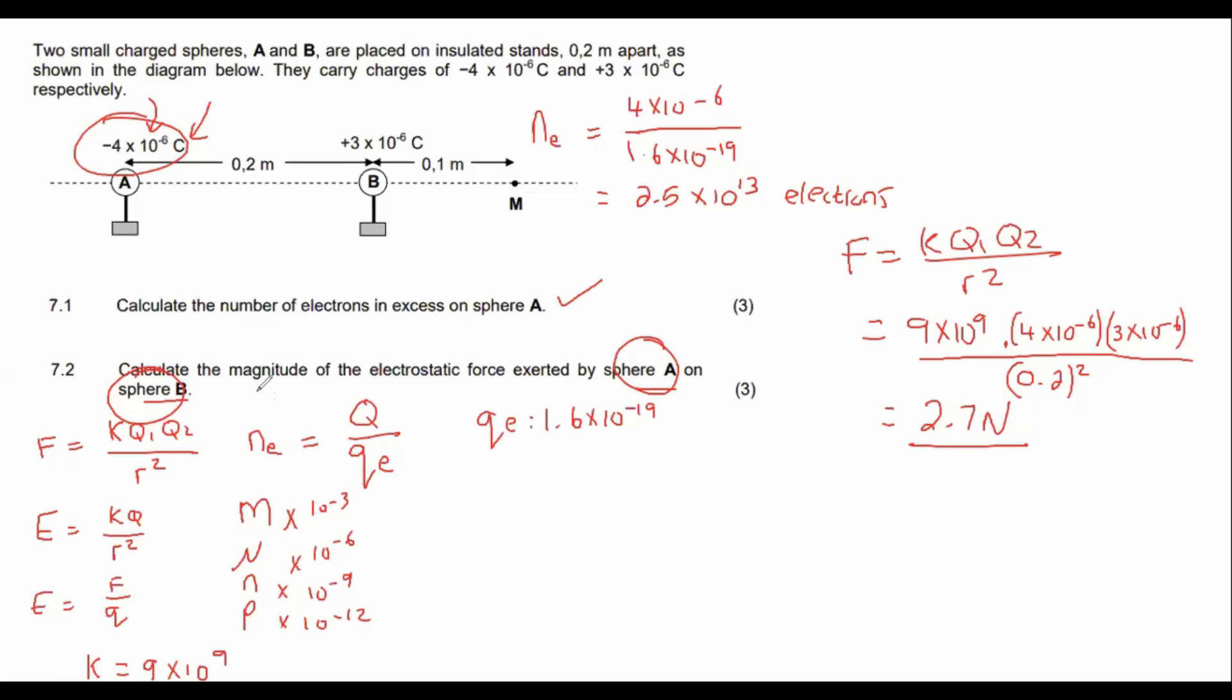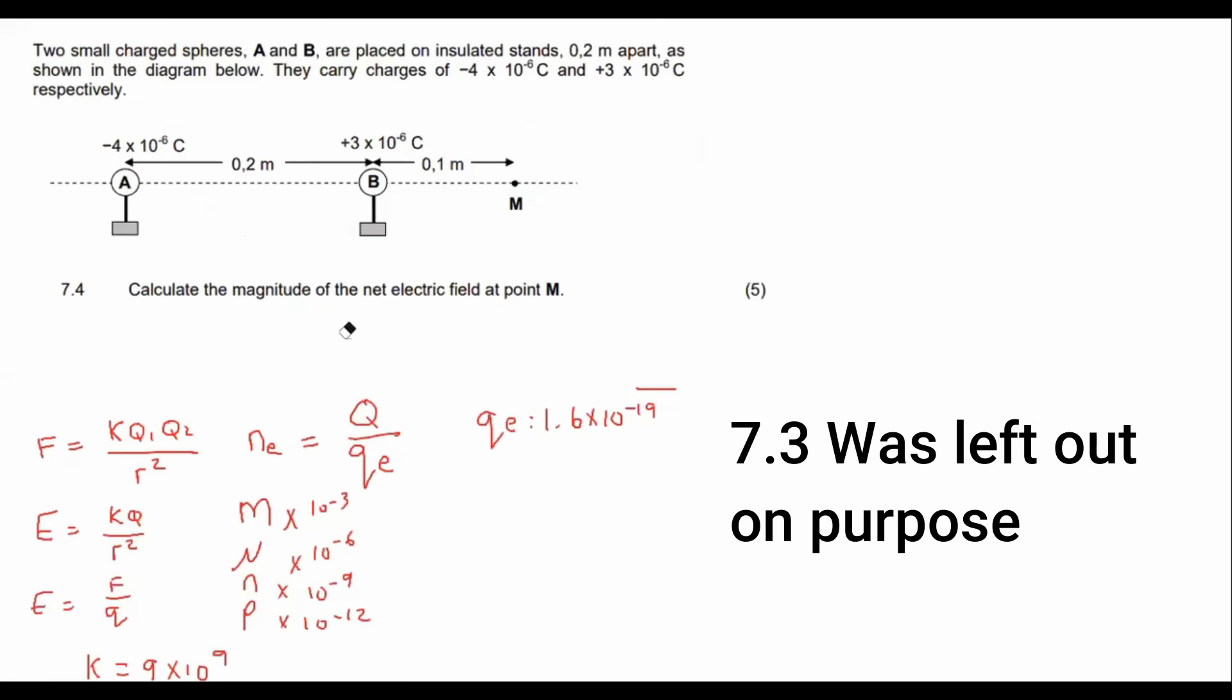But now we can give a direction, calculate the magnet. Oh no, they just said magnitude. Whenever they say magnitude, it actually means that you do not, you do not need to give direction. Whenever they say magnitude, you don't need to give the direction as well. But we do know just out of your own, for your own interest, these two spheres, they would attract each other because they are negative and positive. So they oppositely charged. So they will attract each other. So A would want to go to the right and B would want to go to the left.